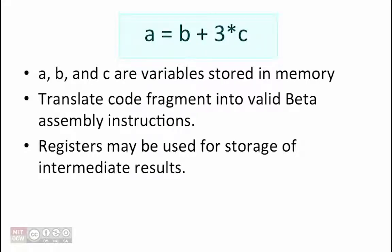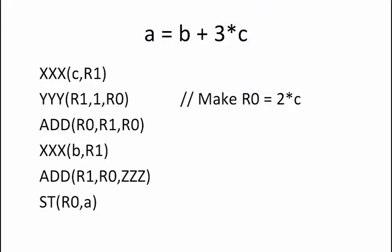Let's begin with the code fragment A equals B plus 3 times C. We can assume that our variables A, B, and C are stored in memory. We can also assume that registers may be used to store intermediate results. Given the following partially completed assembly code, let's determine the missing values that the compiler would have to determine.